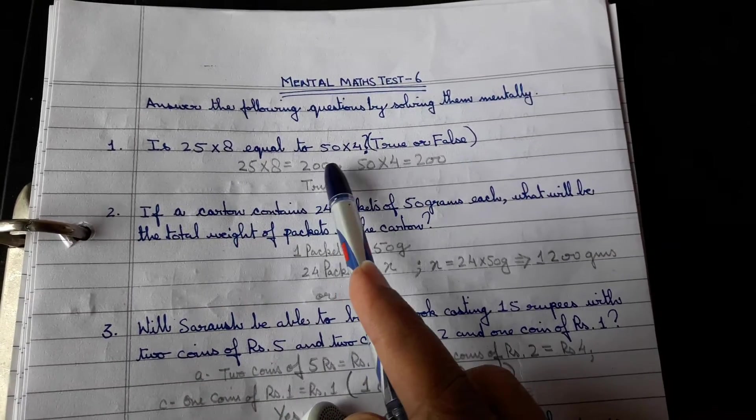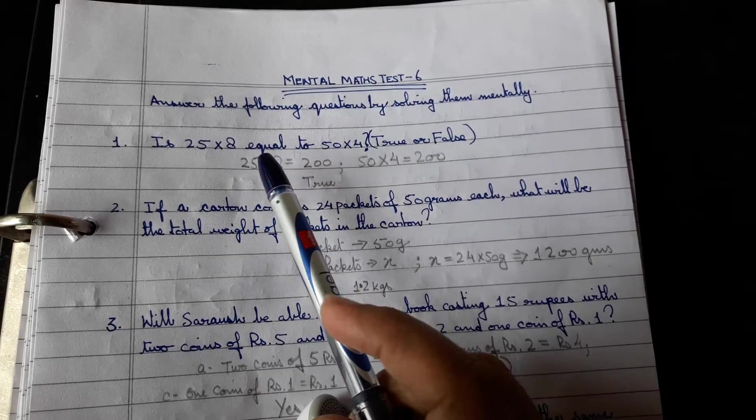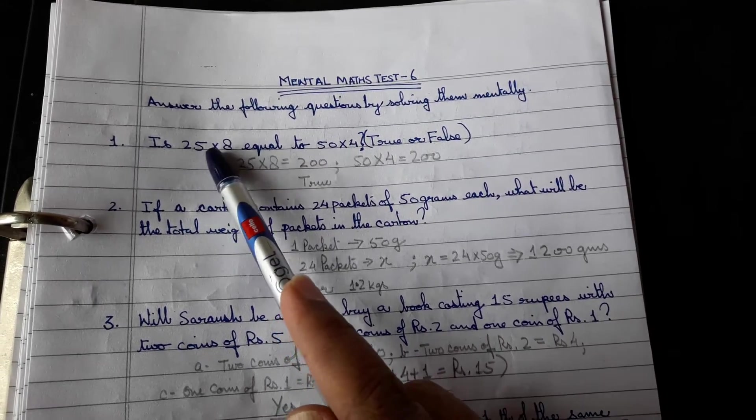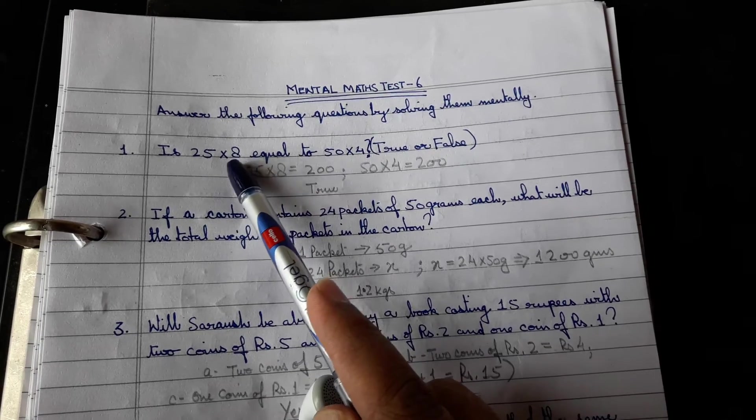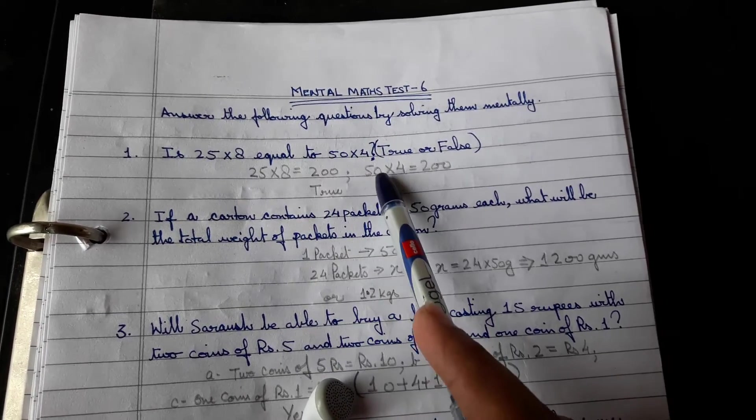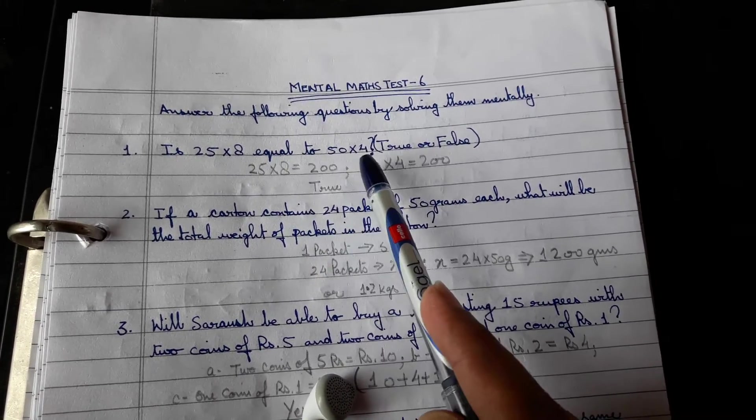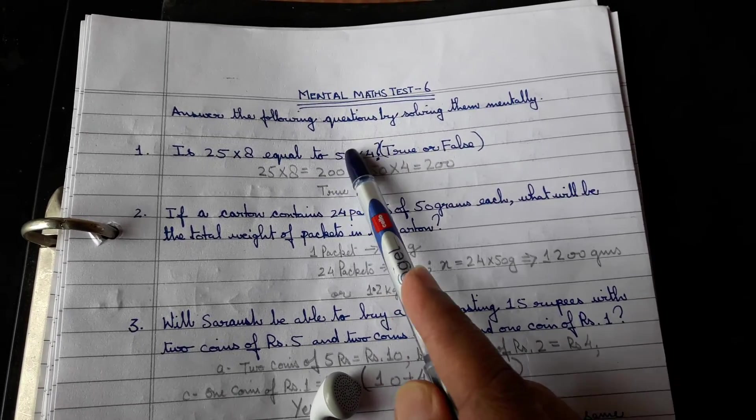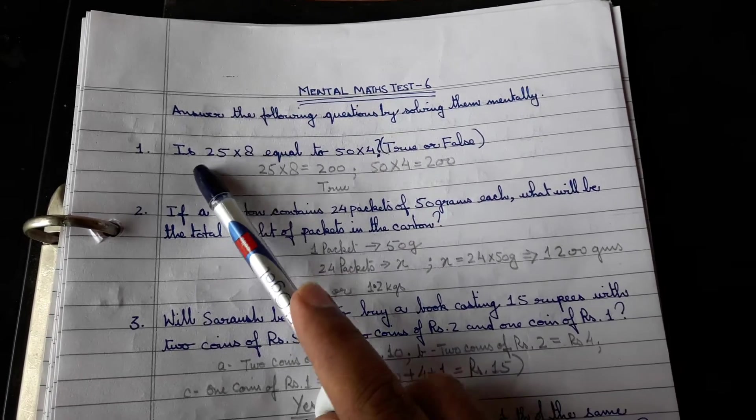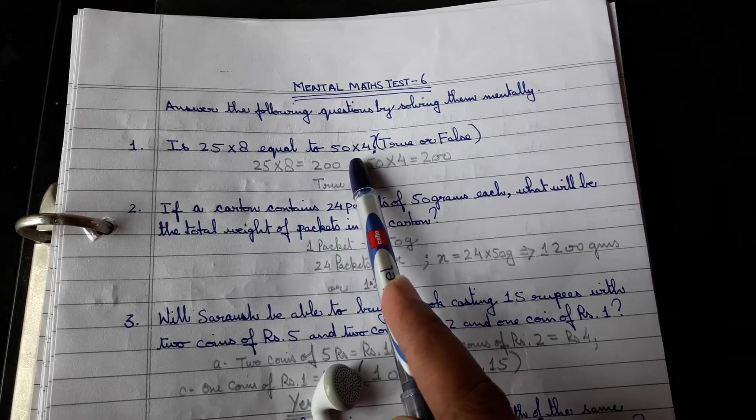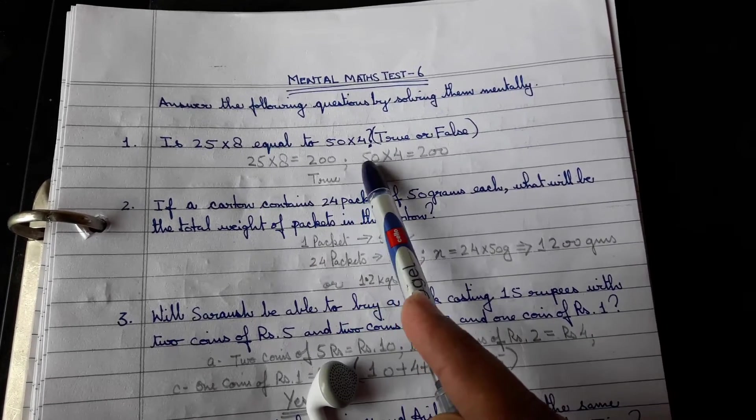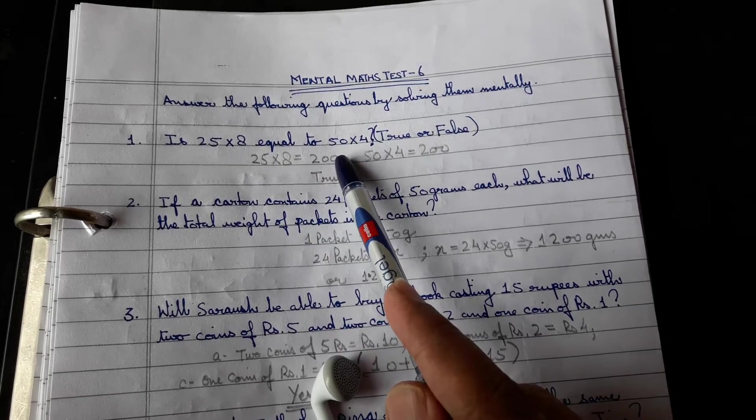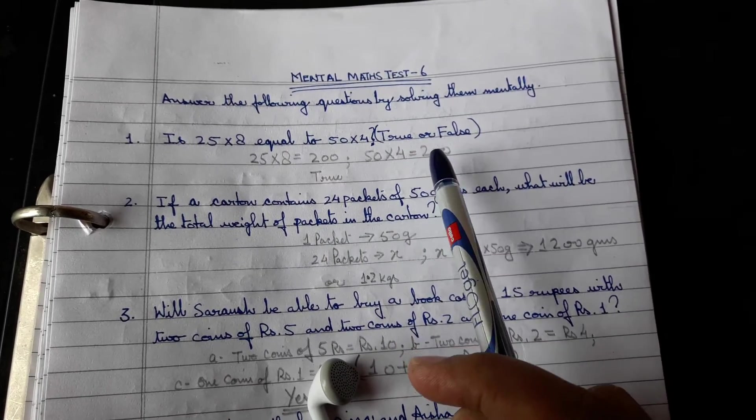25 into 8 equal to 50 into 4? Yes, definitely. See, 25 is half of 50, and 8 is there, and here 4 is half of 8. So you multiply the bigger unit of which the smaller unit is half, and you multiply it by a number which is half of the other multiple. So yes, 25 into 8 is 200 and 50 into 4 is 200.